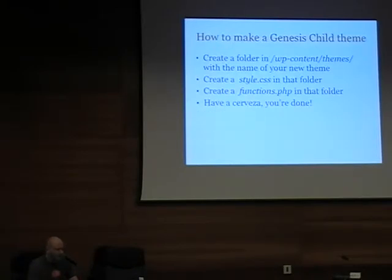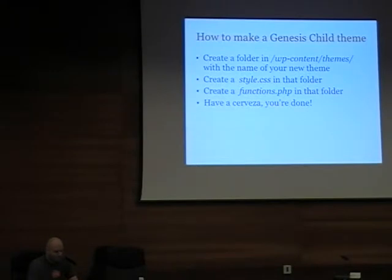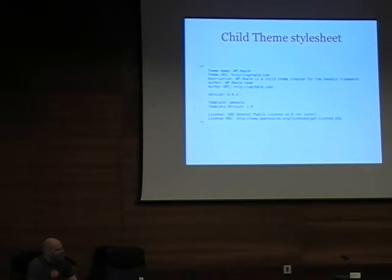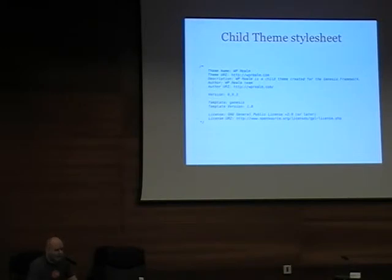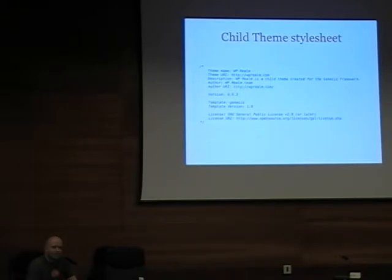How do you make one? All you have to do is create a folder inside your themes directory with the name, create a stylesheet, create a functions.php file, and that's it. In the case of Genesis, the stylesheet states the normal things: theme name, URI, description, author. The important one is the template tag that says Genesis — that's telling the theme to look at Genesis for all the functionality, but the rest is done in the WP Realm theme.